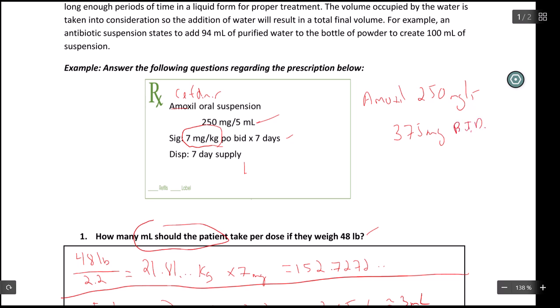How many mLs is the patient going to take? You can do the same thing with this. You know that every five mLs of the suspension is going to have 250 milligrams of the drug. How much of that suspension, if you want 375 milligrams of the drug.